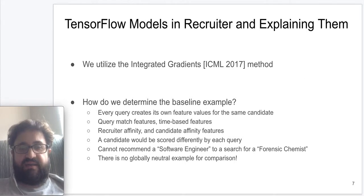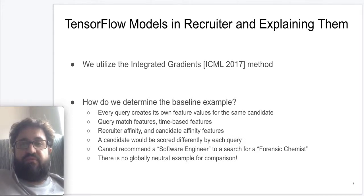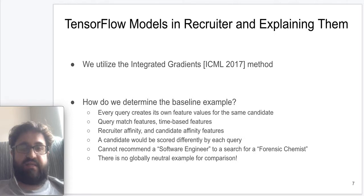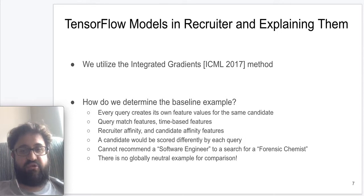Next, we would like to give an understanding of how we attempted to interpret and explain deep neural network based ranking models. For this purpose, we are utilizing integrated gradients method, which we also described in detail in an earlier video. One thing that is of great importance for us is the determination of baseline example. Every query creates its own baseline example for our purposes, since there are significant differences in terms of query-specific features. For example, these could be query match features, time-based features, as well as recruiter and candidate affinity features, which would be different for each and every query instance.